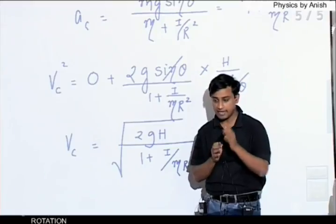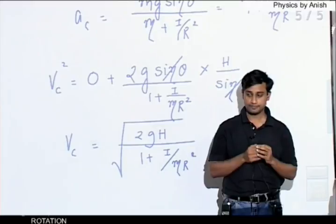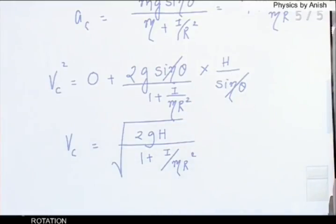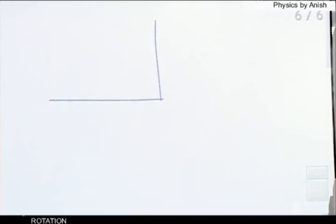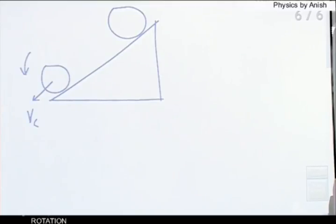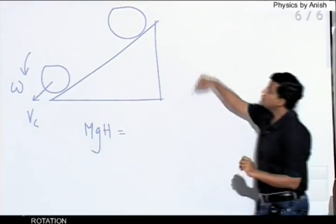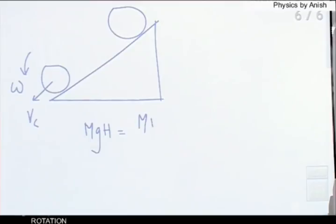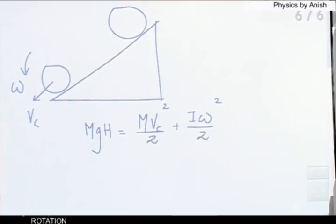Write this down: find Vc at bottom by energy conservation. At the start, there is only potential energy — mg times h. When the body reaches the bottom rolling, kinetic energy includes both linear (half mv squared) and rotational (half I omega squared) components.